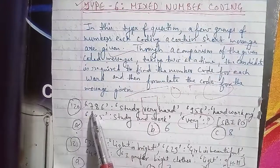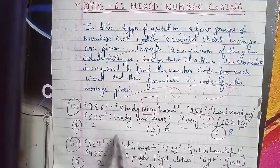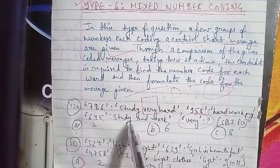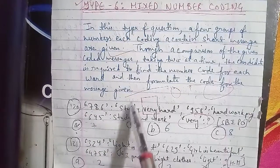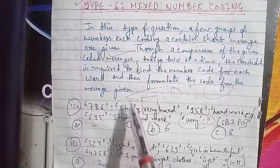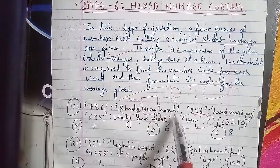So we want 645. 6 is common, so 6 is coded for study, not very. Hard is here: 958.